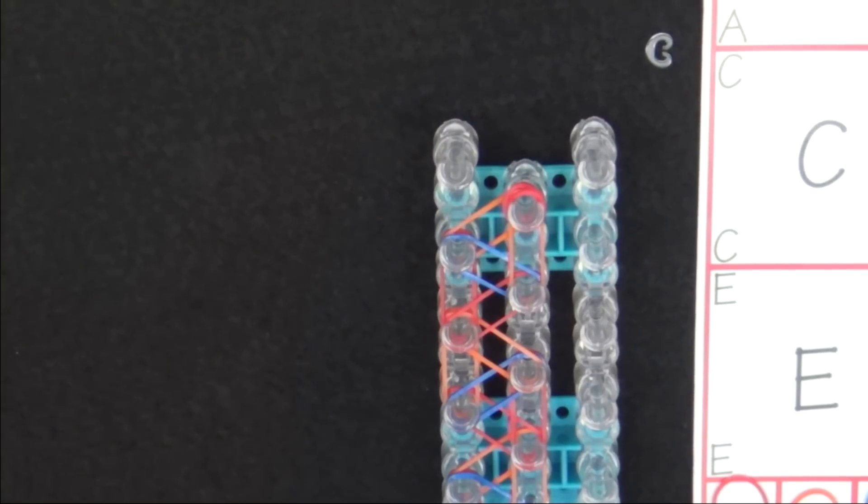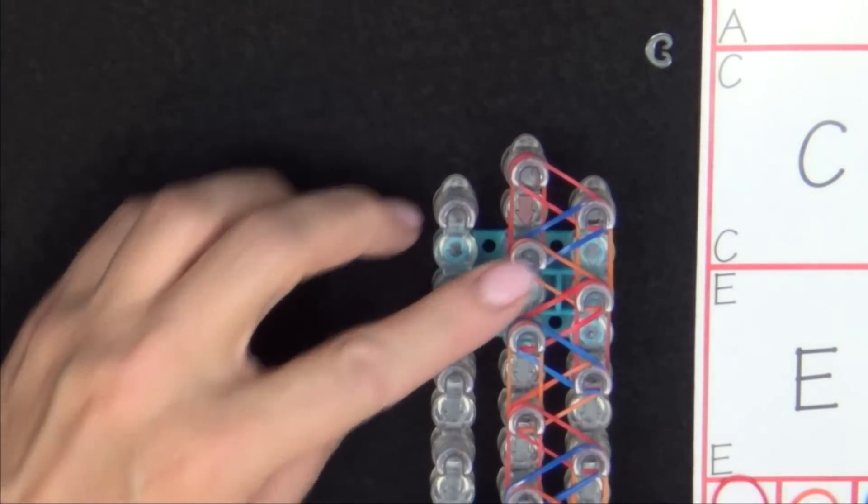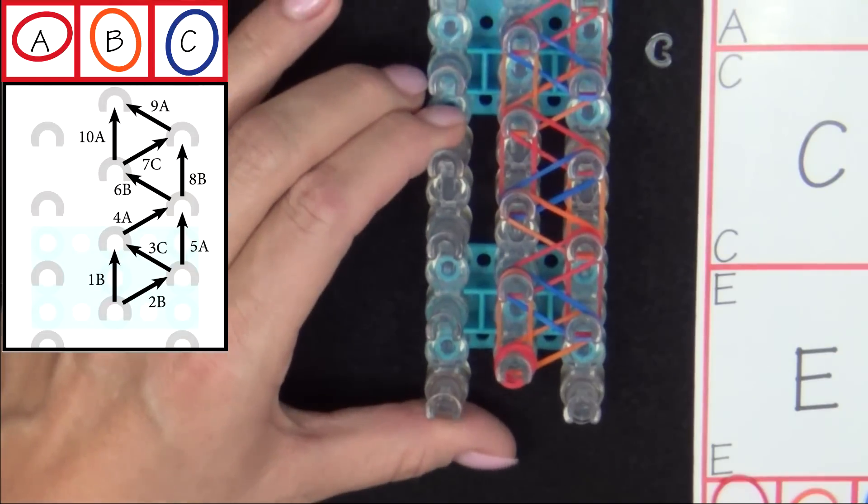Now we're ready to start looping the bands. Turn the loom so that the red arrow is pointing toward you. Refer to the graphic on your screen as you loop the first 10 bands.